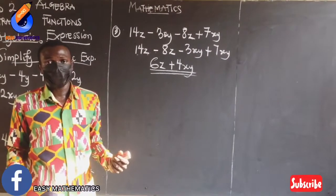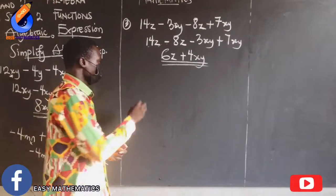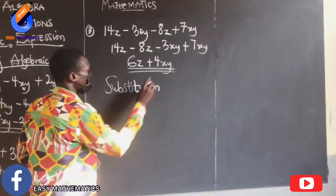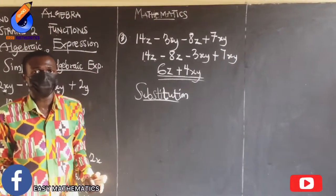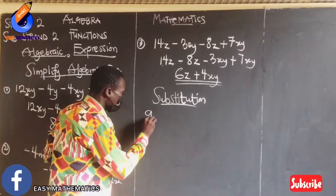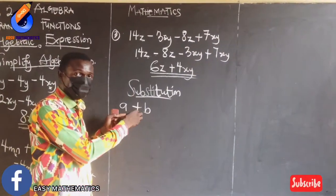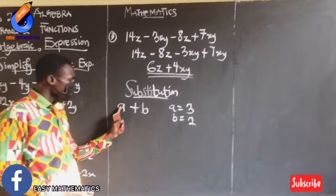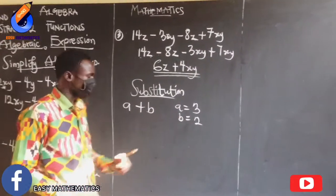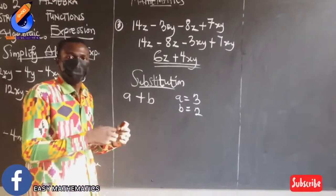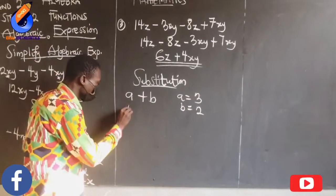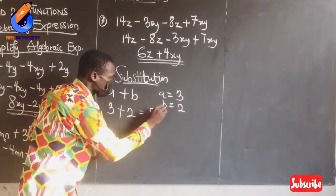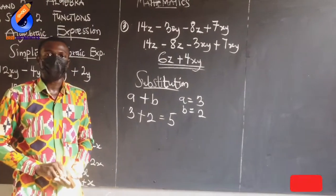Let's look at the last topic under algebraic expressions — substitution. When we say substitution, it means to change. So if I have a plus b and they are saying a equals 3 and b equals 2, wherever you see a, substitute it with 3, and wherever you see b, substitute with 2. This gives me 3 plus 2, and therefore my answer is 5.